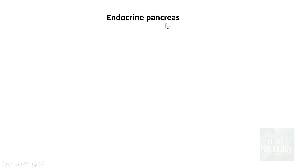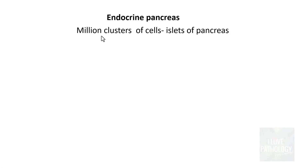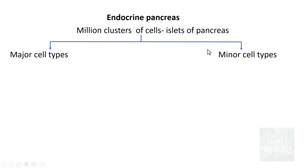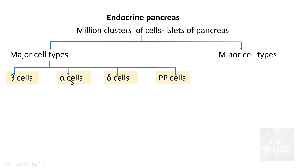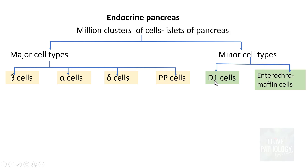The endocrine pancreas is a collection of clusters of cells. There are around 1 million clusters, referred to as pancreatic islets. These pancreatic islets contain cells of major and minor cell types. There are 4 major cell types — beta cells, alpha cells, delta cells, and PP cells — and 2 minor cell types: D1 cells and enterochromaffin cells.